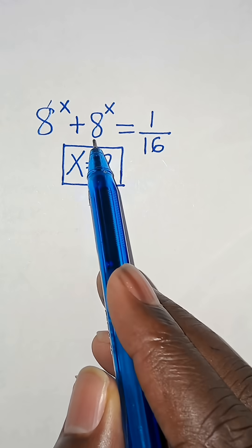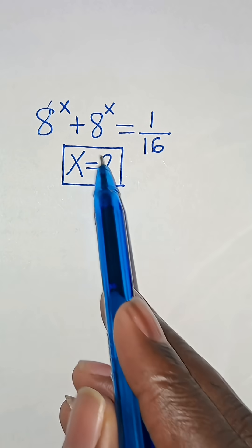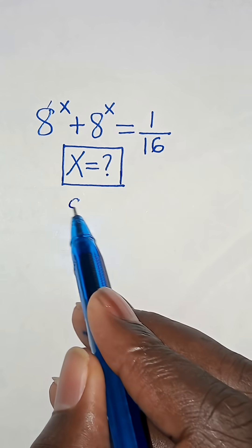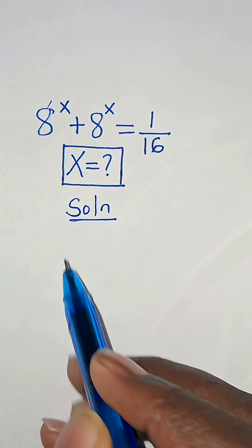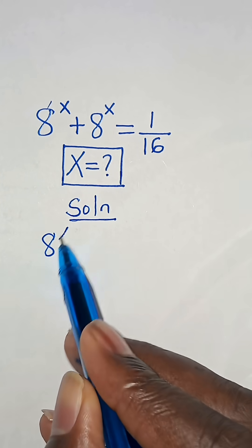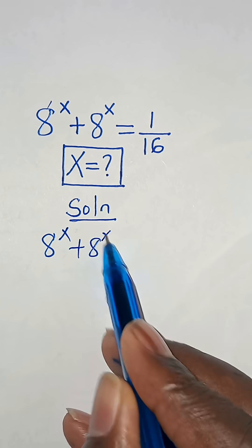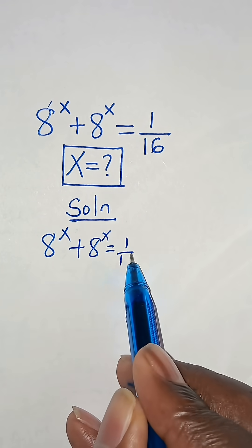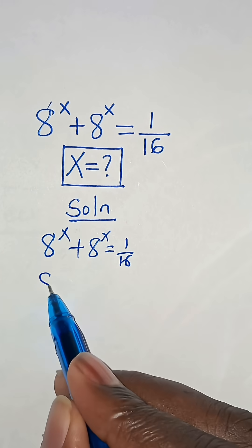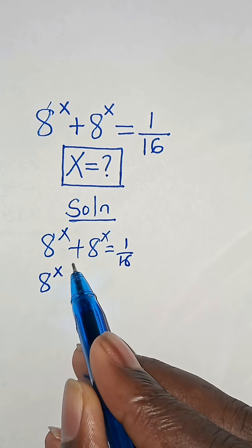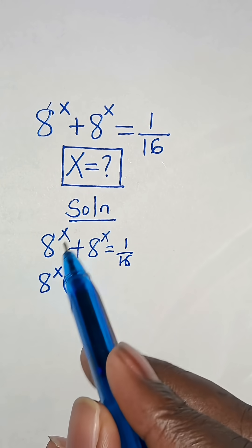8 to the power of x plus 8 to the power of x is equal to 1 over 16. So what is the value of x? From here we have 8 to the power of x plus 8 to the power of x equals 1 over 16. Since 8 to the power of x is common, we factor out 8 to the power of x.